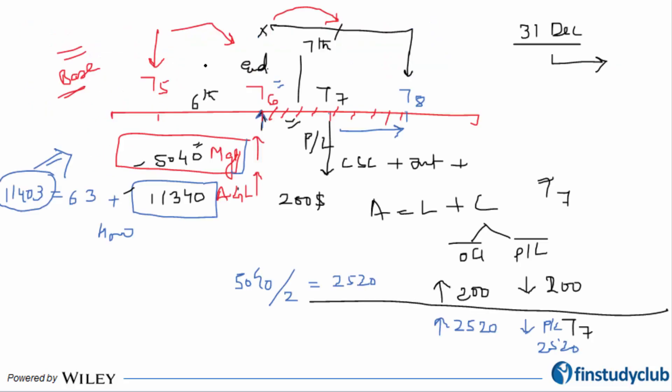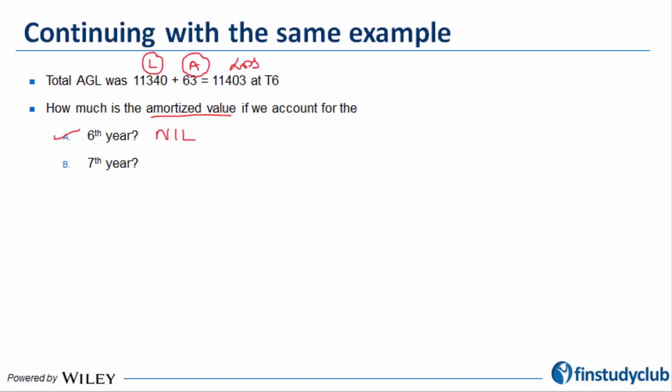The answer is nil. The explanation is that any amortization is going to start from the next year compared to the time zone that it has come up. Both of these numbers, 11,403, have come up towards the end of the sixth year, so amortization of these values will happen in the seventh year.